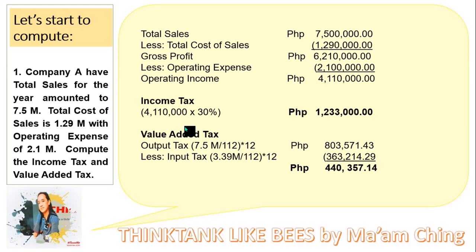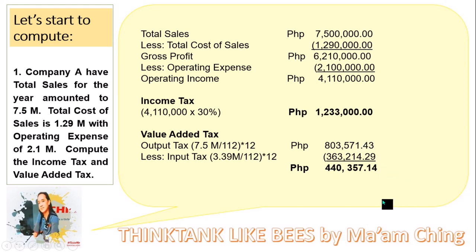You need to pay this income tax to the BIR. For the value-added tax, divide 7,500,000 by 1.12, then multiply by 12% to get the output tax of 803,571.43. Minus the input tax: add 2.1 million plus 1.29 million, divided by 112, times 12, to get the input tax of 363,214.29. Output tax minus input tax gives a VAT payment of 440,357.14. So the businessman needs to pay two taxes: income tax of 1,233,000 and business tax (value-added tax) of 440,357.14.